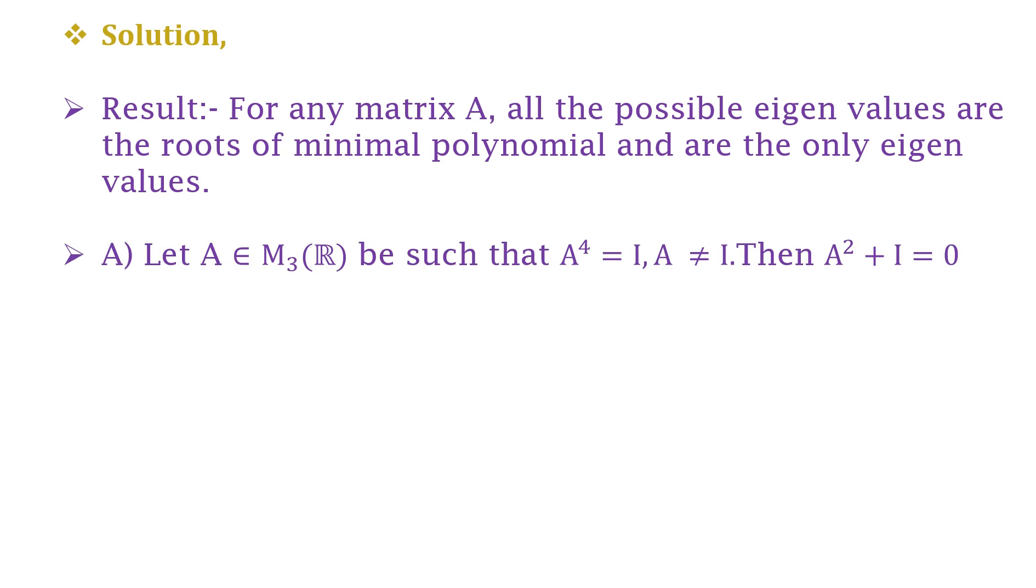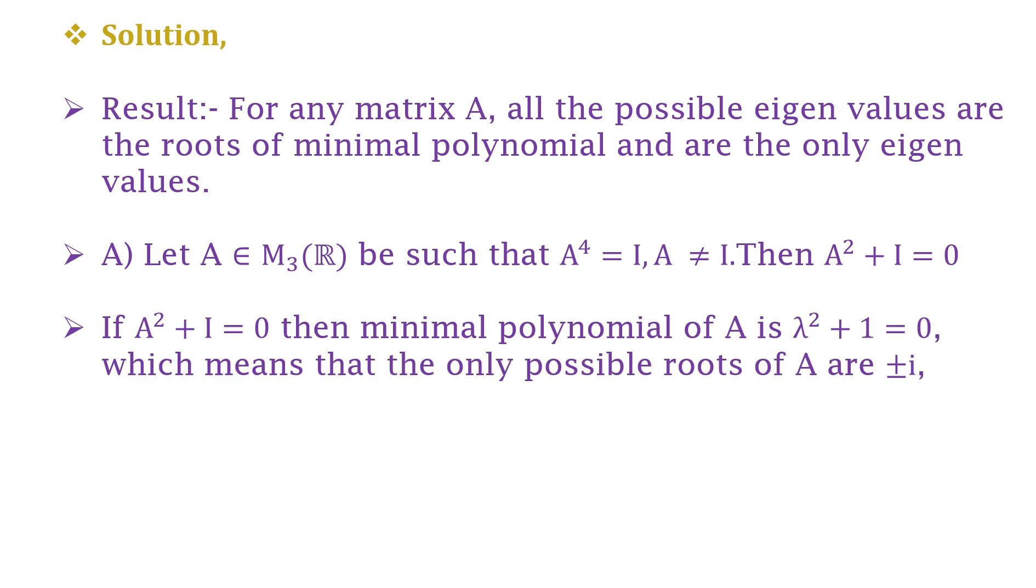Option A says that A belongs to M₃(ℝ) such that A⁴ = I and A is not an identity matrix, then A² + I = 0. If this statement holds, that is A² + I = 0, then the minimal polynomial of A is λ² + 1 = 0.